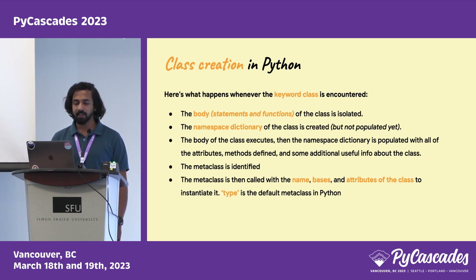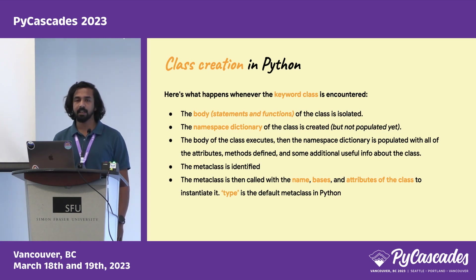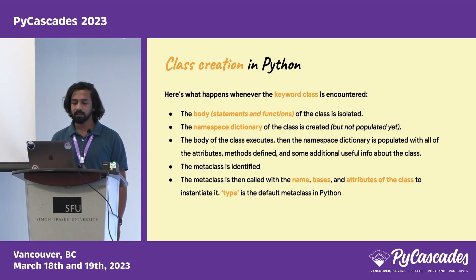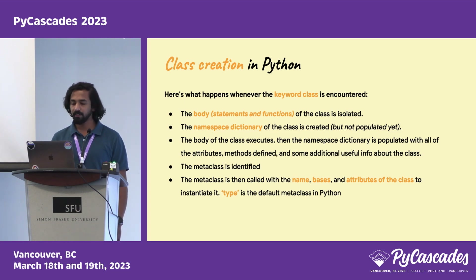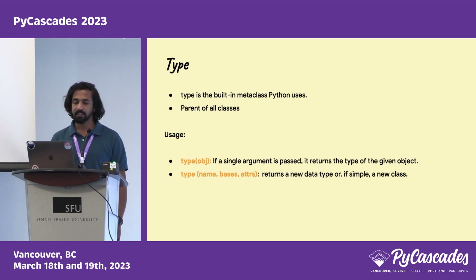In the last two steps of class creation, the metaclass of the class is identified, and then the metaclass is called with name, bases, and attributes of the class to instantiate it. By default, type is Python's default metaclass. Type is the built-in metaclass of Python — it's the parent of all classes.